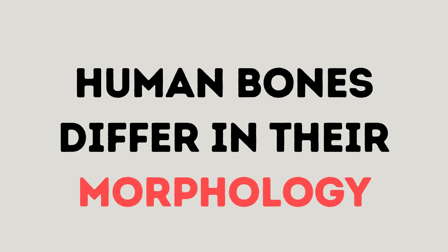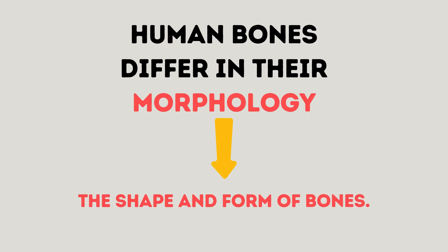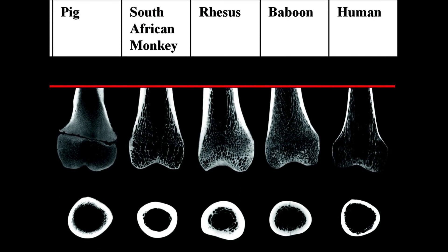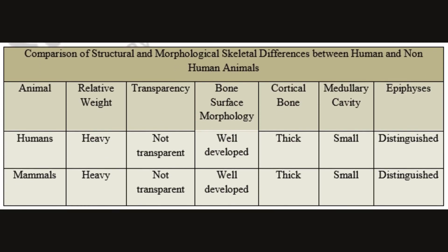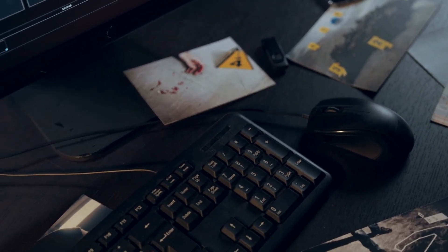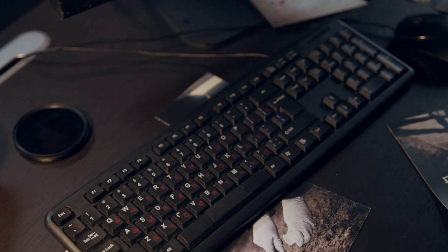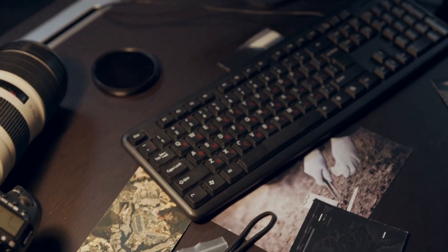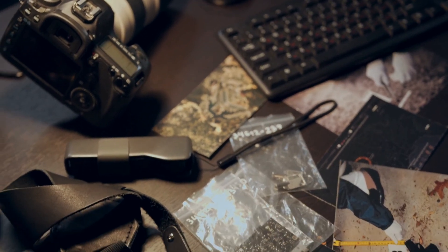Once you confirm that you're looking at bone, the next step is determining: is it human? Human bones often differ in their morphology — the shape and form — compared to animal bones. For example, the compact layer of a human long bone is thinner, making it less dense than the thicker, heavier bones of many non-human mammals. So the size, shape, and density of a bone can all help determine if it is human.